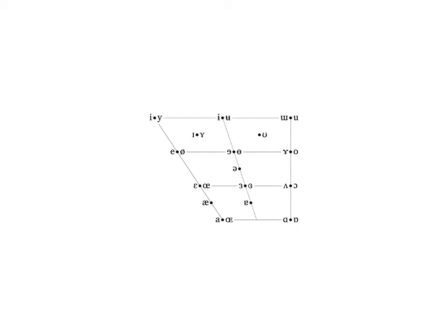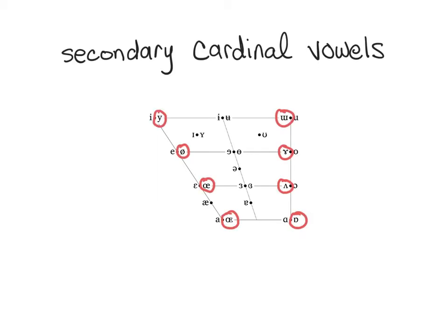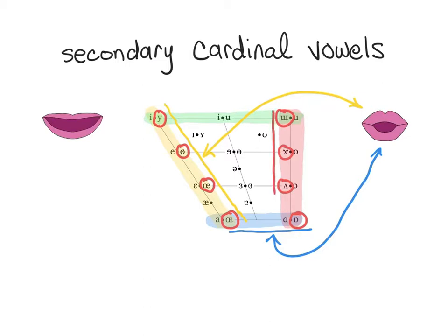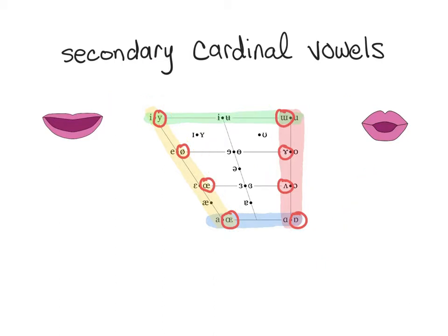The next eight cardinal vowels are called the secondary cardinal vowels. These are just like the primary cardinal vowels — highest, frontest, backest, lowest, most spread, and most round articulations possible — but they have the lip configuration reversed from the primary cardinal vowels. That is, all of the front and low secondary cardinal vowels have rounded lips instead of spread lips, and the non-low back secondary cardinal vowels have spread lips instead of rounded lips. The secondary cardinal vowels are conventionally numbered 9 through 16, again beginning with the high front vowel and moving counterclockwise around the vowel space.